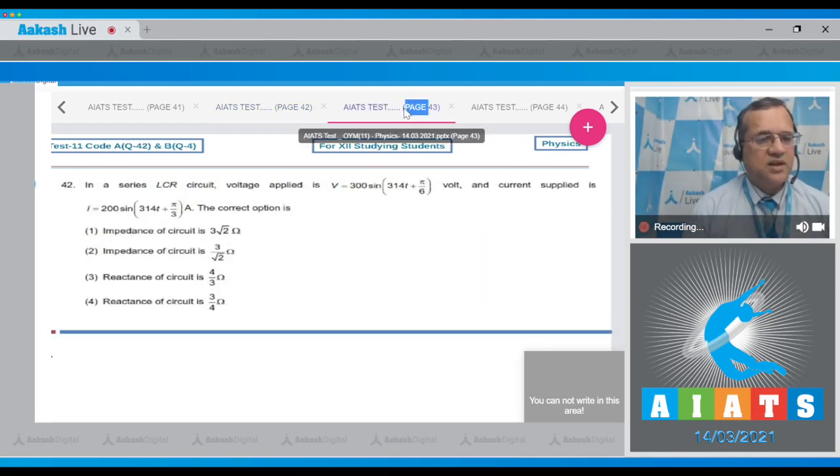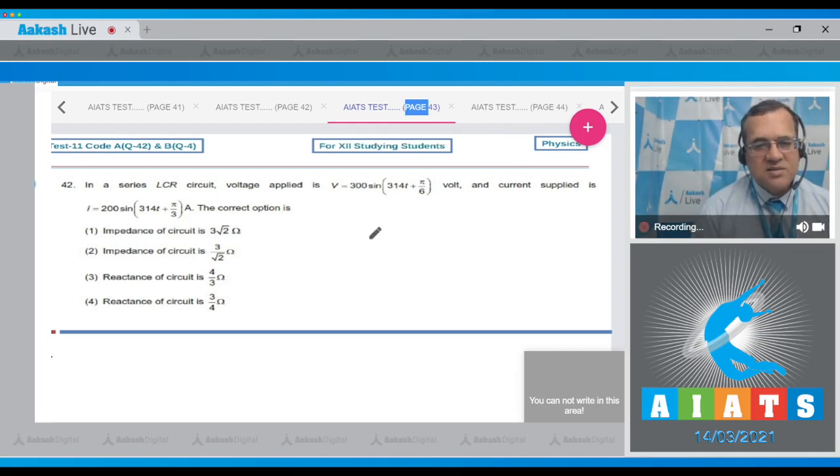Question 42: In a series LCR circuit, voltage applied is 300 sin(314t + π/6) volts and current is 200 sin(314t + π/3) amperes. Find the impedance and reactance. Looking at the phase difference between voltage and current, we have π/3 and π/6, so the phase difference is π/6 with the current leading.